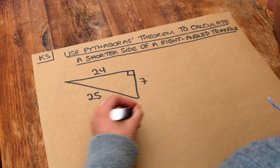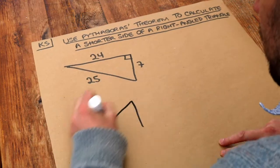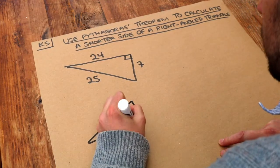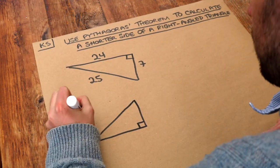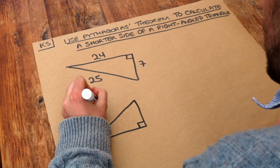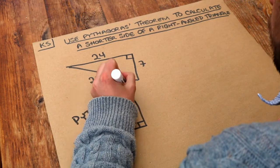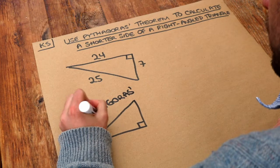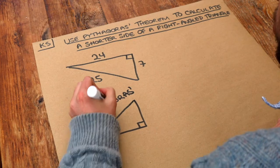In the previous video we encountered Pythagoras theorem, and Pythagoras theorem applies to right-angled triangles and allows us to find one of the lengths of the triangle if we know two of the others.